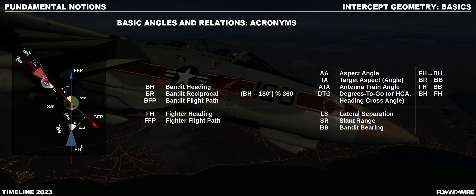Each of these angles is defined as X to Y. For example, target aspect is bandit reciprocal to bandit bearing. This means that looking at our BDHI or similar instrument, we start from the value of BR, then we move clockwise or counterclockwise until we find BB. This gives us a value, but also a sign, and more on this later.